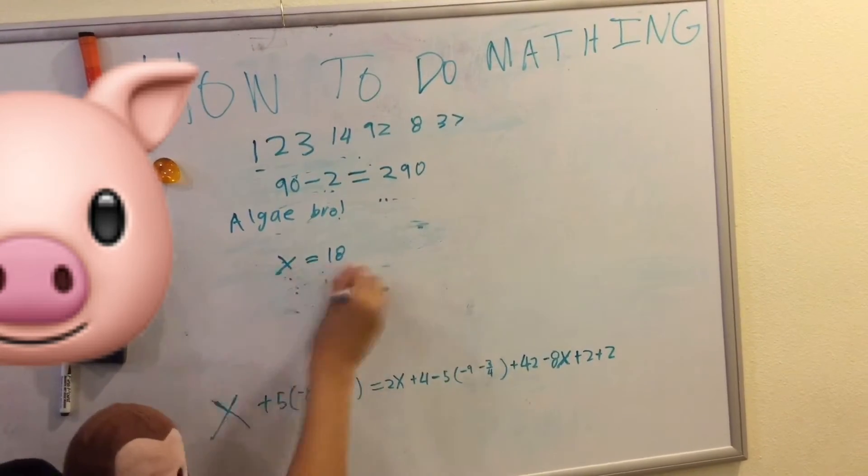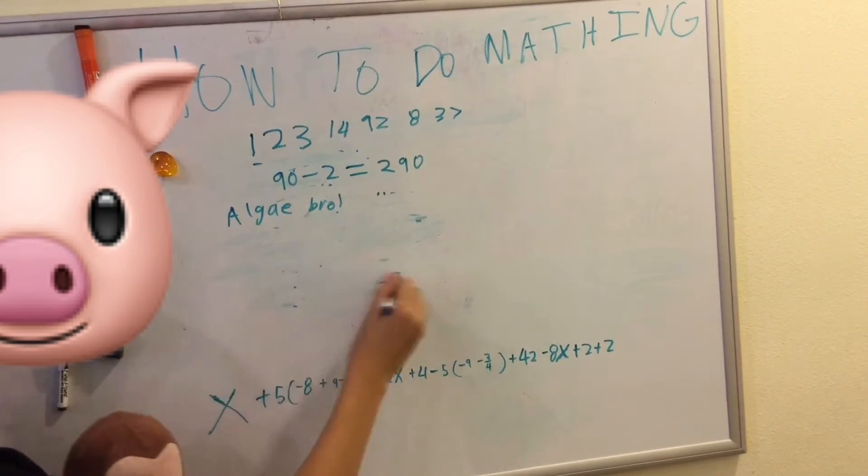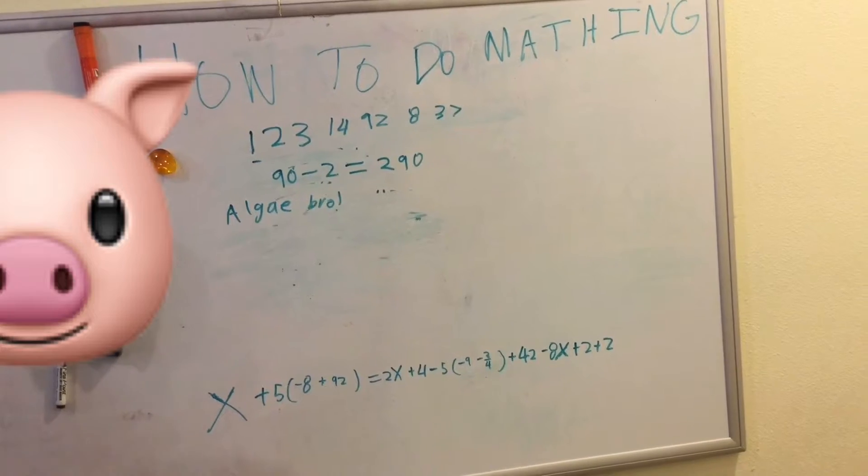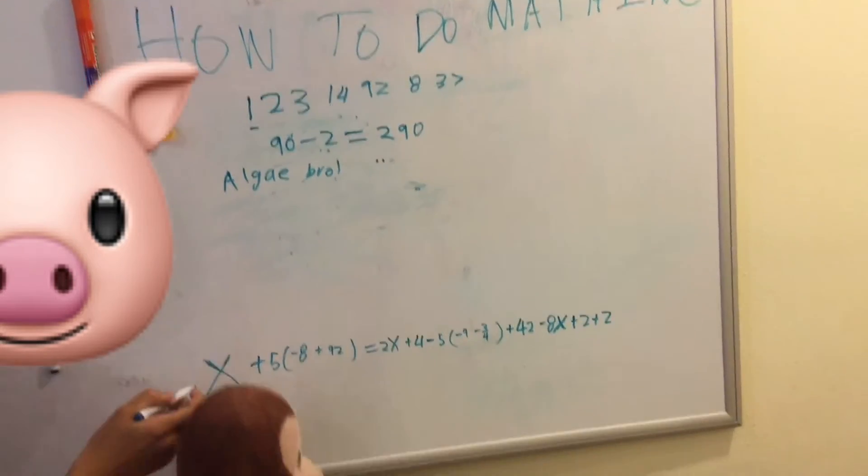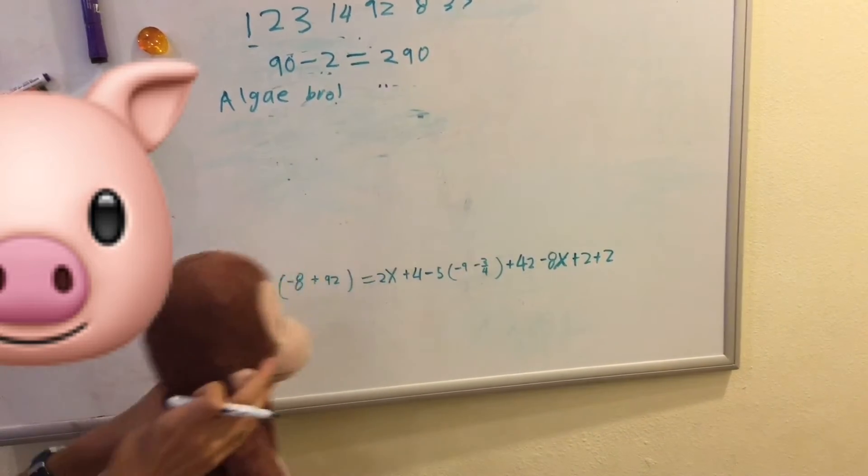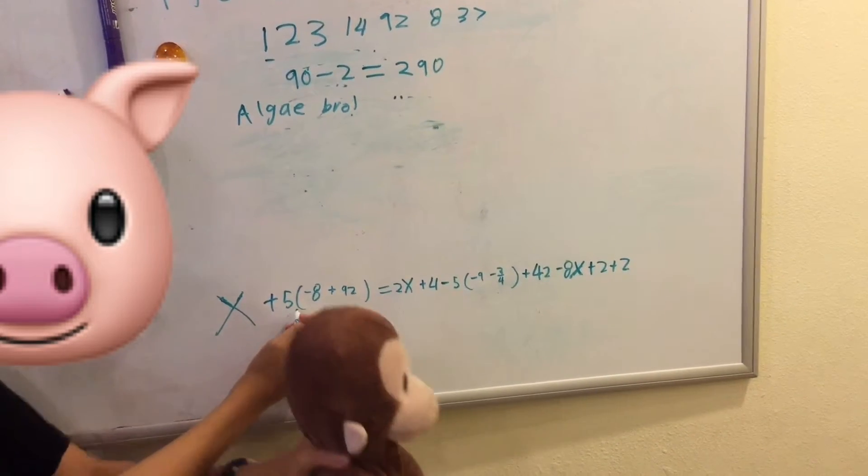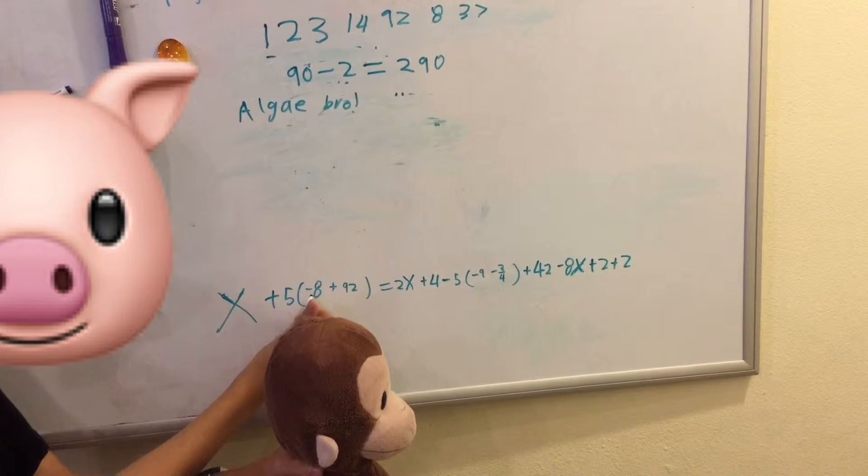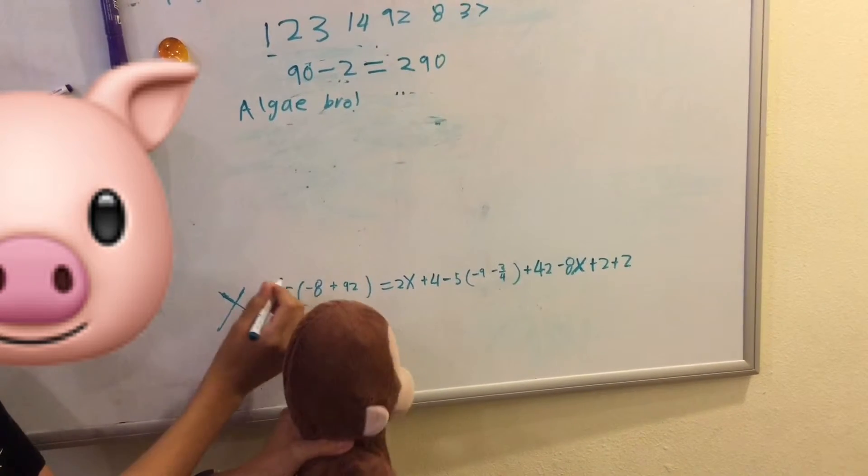Okay. Now, let's start this problem that we have, which is what we've been looking to. So, this is Brandy's age right here. X represents Brandy's age. But we don't know what Brandy's age is. So, let's start. Five times negative A.